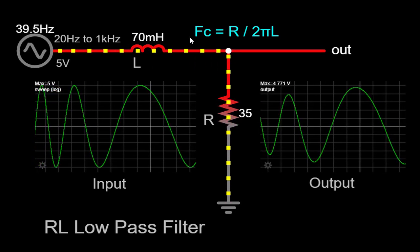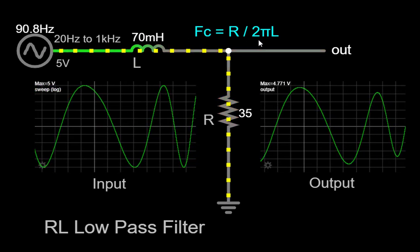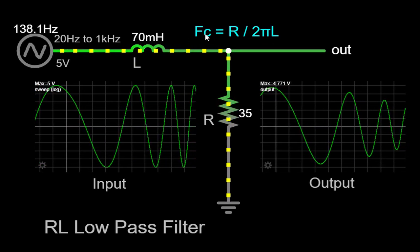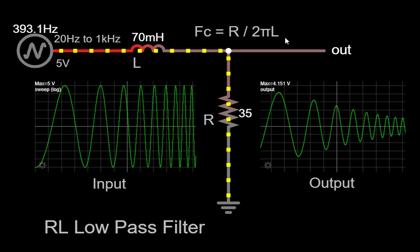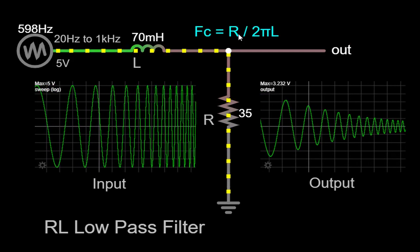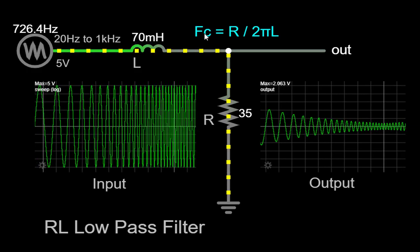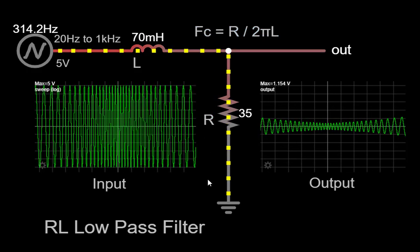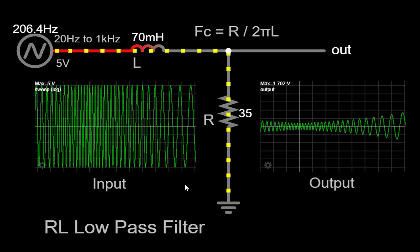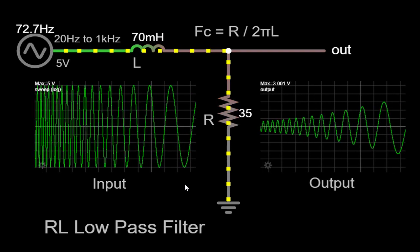The cutoff frequency of an RL low-pass filter can be calculated using the formula FC equals R slash 2πL, where FC represents the cutoff frequency, R is the resistance, and L is the inductance. In our example, with a resistor value of 35 ohms and an inductance of 70 millihenry, we can calculate the cutoff frequency as follows: FC equals 35 slash 2π times 0.07. This yields a cutoff frequency of approximately 75.24 Hz.